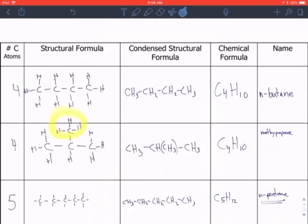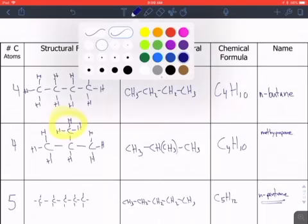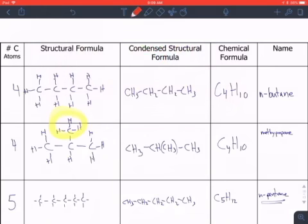And I want to go back to this part where we talked about how when we have long chains, we can have situations where they can be organized differently. They can have different connections. And with this first guy here, they're all nicely in a row and we call that n-butane.